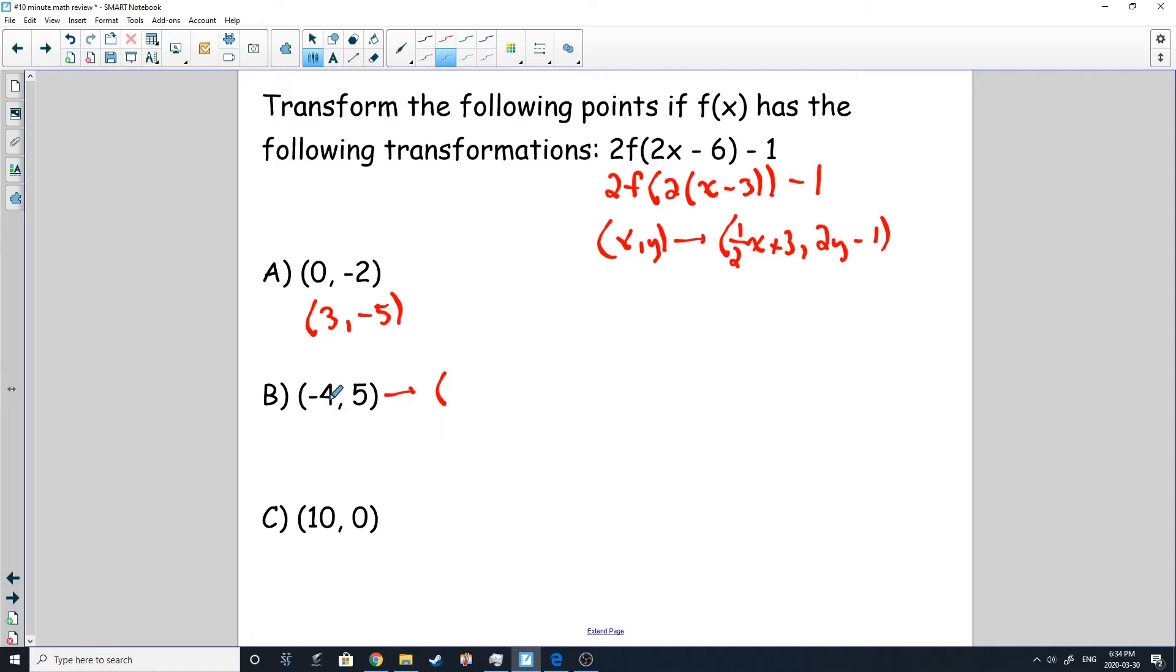Right here, what's going to happen here? We're going to go negative four times a half, which is negative two plus three, which is one. And then on the Y value, we got five times two, ten, subtract one is nine.